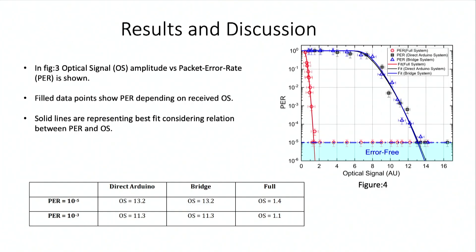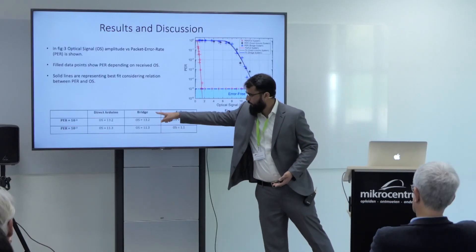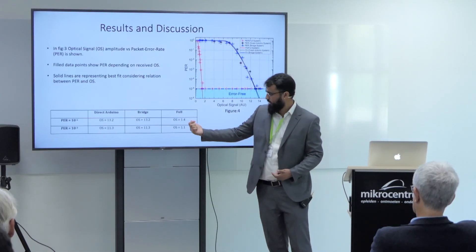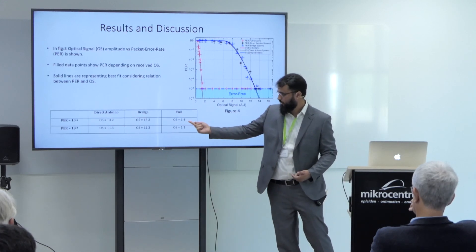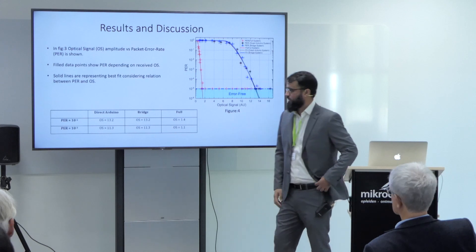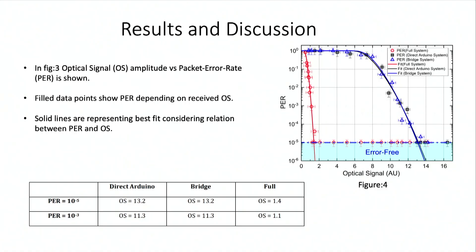Summarizing the results in the table for a packet error rate of 10^-5: the direct Arduino receiver needs 13.2 arbitrary units of optical signal, and the same is true for the bridge system — confirming that the USRP N210 does not introduce noise. With the full system including the filtering stage, we need only 1.4 arbitrary units. For a packet error rate of 10^-3, which is the forward error correction limit, the system performance is improved 10-fold, requiring 10 times less signal compared to the direct Arduino system which needs 11.3 arbitrary units.